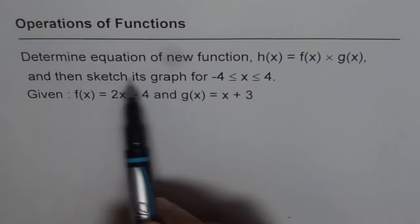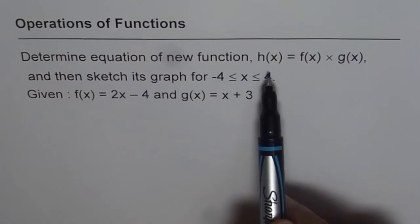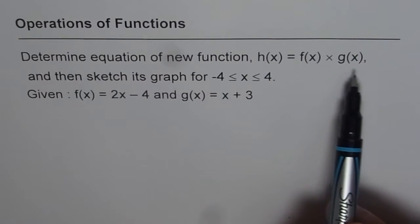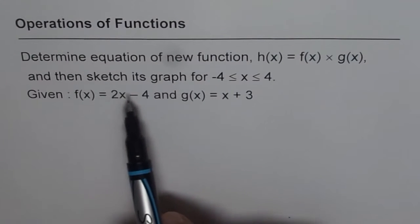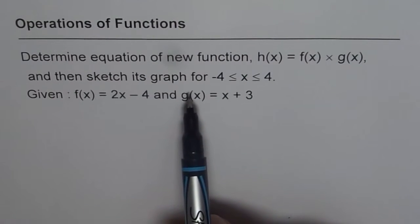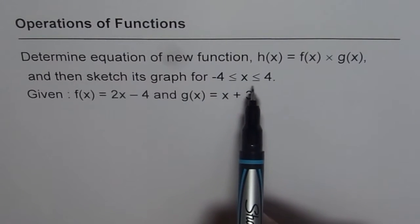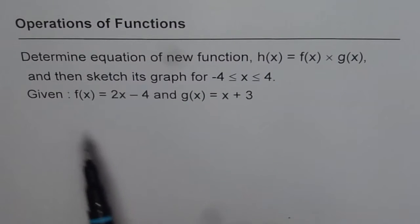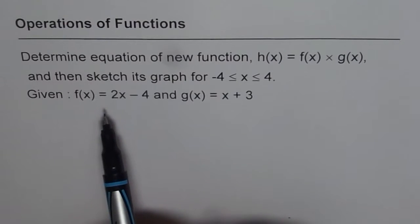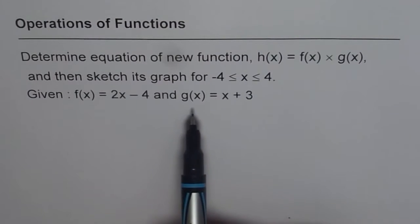Determine equation of new function h(x) equals f(x) times g(x) and then sketch its graph for x greater than or equal to minus 4 and less than or equal to 4. Given f(x) equals 2x minus 4 and g(x) equals x plus 3.